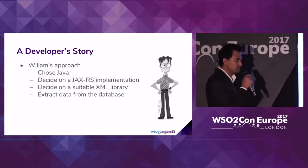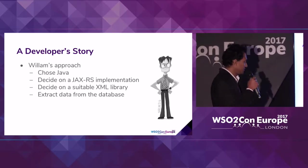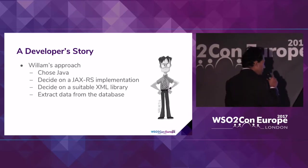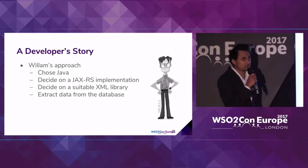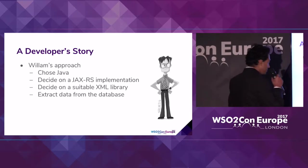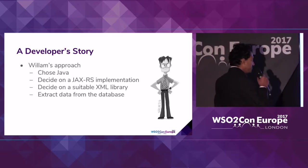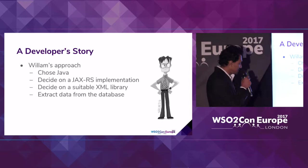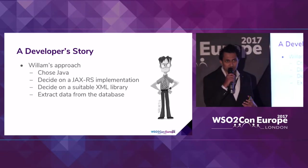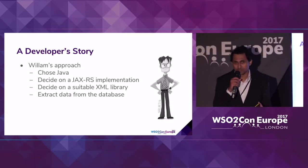Let's start with William, who is our conservative developer. William is a big fan of Java, so he has chosen Java to implement this requirement. As soon as you decide on using Java, you have to come up with some JAX-RS implementation because this service needs to be a RESTful service. There are many JAX-RS implementations — you can choose whatever you want. Once that is done, he has to decide on a suitable XML library, because this service has to send back a response in XML format. Since Java does not have any inbuilt support for XML, you have to come up with some third-party libraries.